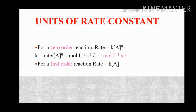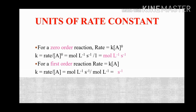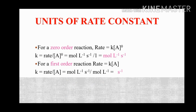For a first order reaction, k equals rate divided by concentration of A. The unit of rate is mol L⁻¹ s⁻¹ divided by concentration of A in mol L⁻¹. When we cancel the mol and L⁻¹ terms, the unit of the rate constant for a first order reaction becomes s⁻¹.